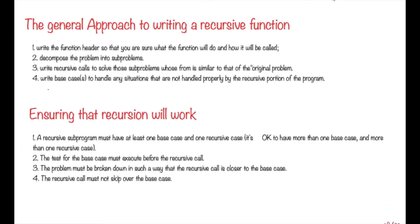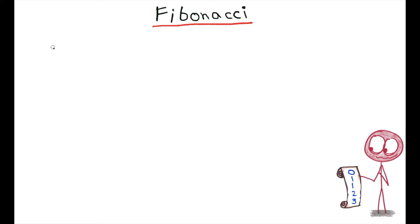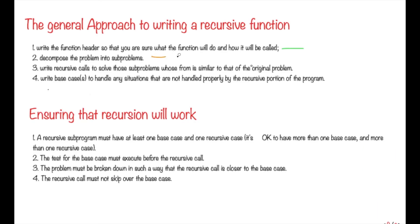We will use the general approach to writing a recursive function. Step one says to write the function header so that you are sure what the function will do and how it will be called. Our function returns an integer value, so the return type is int and the function name is f(n), where n is the nth Fibonacci number we want to calculate.